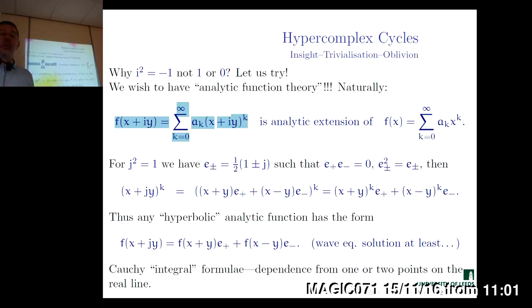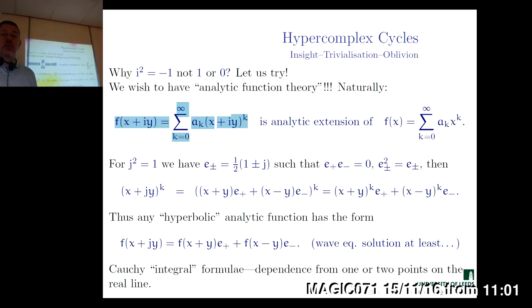In fact, there is no reason why for that simple manipulation with series you need to restrict yourself to i-squared being minus one. You could equally use double numbers with square equal to one, or dual numbers with square equal to zero.